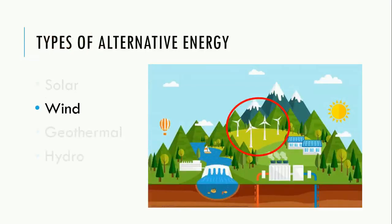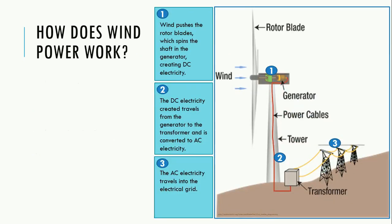Next, wind energy. You've probably seen turbines dotting the landscape. Wind pushes the blades of the turbine, which spins the shaft of the generator to create direct current electricity. The direct current is converted by the transformer into alternating current, which travels into the electrical grid.